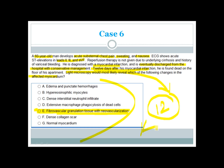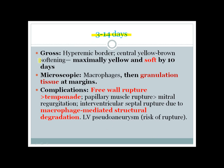This process completes within day 14, after which collagenous scar formation begins. In the 4 to 14-day period, gross features show hyperemic borders around necrotic myocardium with yellow-brown softening at the center, maximal by day 10. Microscopy shows increased macrophage activity and progressive granulation tissue formation at the margins. The most common complication in this phase is free wall rupture causing cardiac tamponade; papillary muscle rupture causing mitral regurgitation; and interventricular septal rupture — all due to macrophage-mediated degradation of necrotic myocardium.